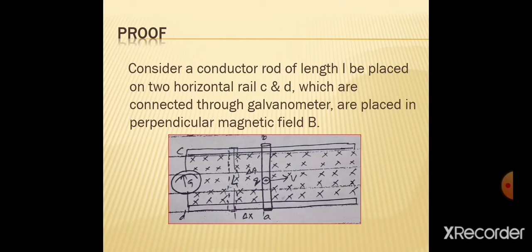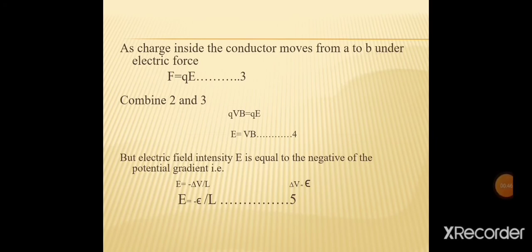Charge carrier q پر electric force بھی ہوگی: F = qE (equation 3)۔ Equations 2 اور 3 کو combine کریں: electric force = magnetic force۔ دونوں طرف سے q cancel ہو جائے گا اور جو relation آئے گا وہ ہے: E = vB (equation 4)۔